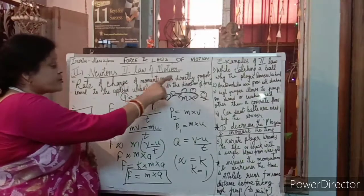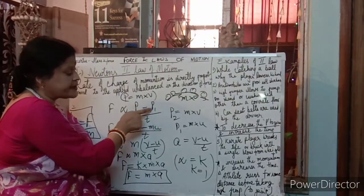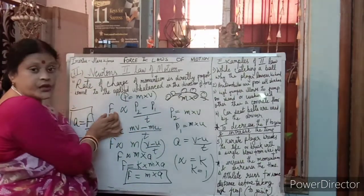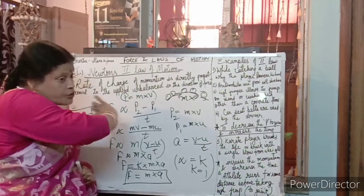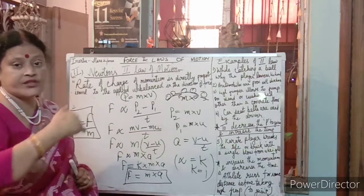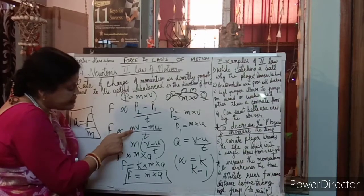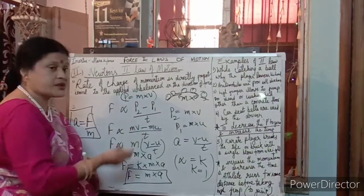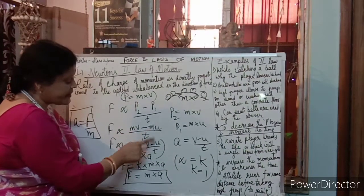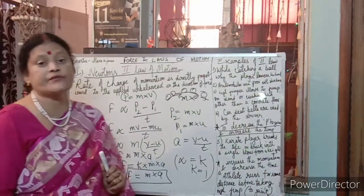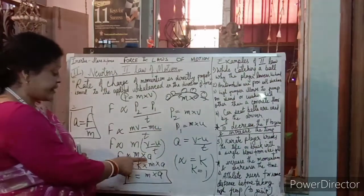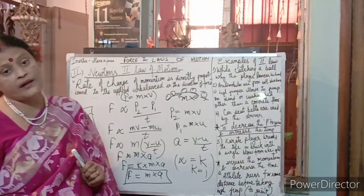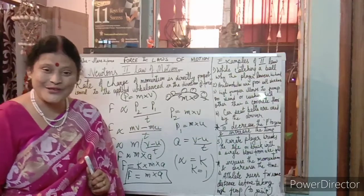The second law measures force. The measurable formula is F = m×a. To summarize: F ∝ (p₂ − p₁)/t; p₂ = mv, p₁ = mu; so F = m(v−u)/t = m×a, where k = 1. The first law defines force and the second law measures it.